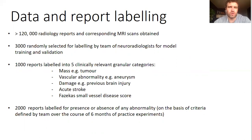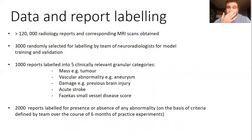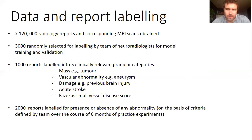Of these, 1,000 reports were labeled for the presence or absence of each of five clinically relevant categories of abnormalities: mass, vascular abnormality, atrophy, acute stroke, and white matter small vessel disease. In addition, 2,000 reports were labeled for the presence or absence of any abnormality, as defined by our team who worked over six months to design an exhaustive list of abnormalities desirable for an automated triage system to capture — that list is provided as an appendix in the paper.